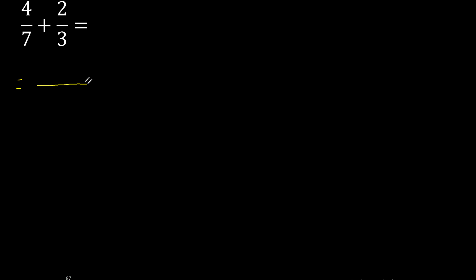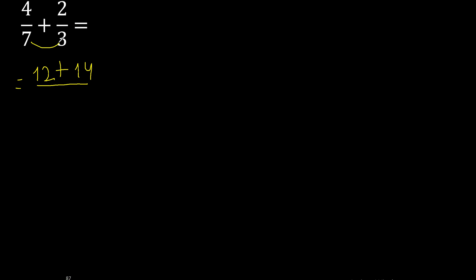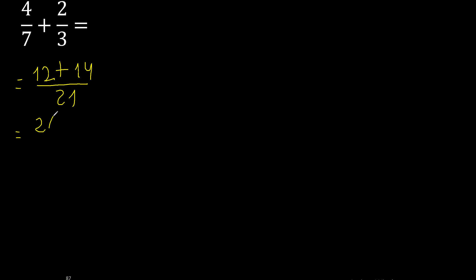First multiply like this: 3 multiplied by 4 is 12, 7 multiplied by 2 is 14, 7 multiplied by 3 is 21, giving 26.